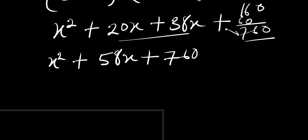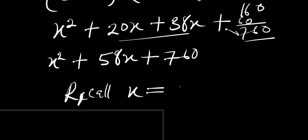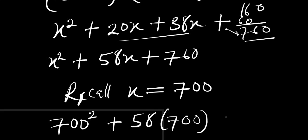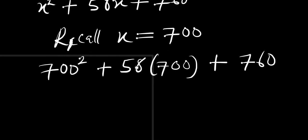Now we replace x with 700, recalling that x equals 700. So we are going to have 700 squared, plus 58 times 700, plus 760.